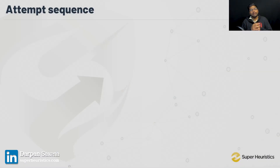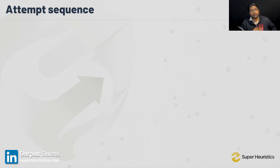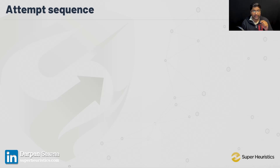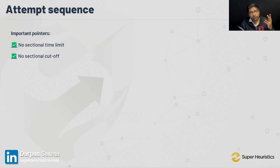Now let's get to the most important thing I've kept for last because you had to understand what the paper is like — the attempt sequence. Very important. What are the important things we know about this? We know two things: that there is no sectional time limit, and there is no sectional cut-off which you need to clear.